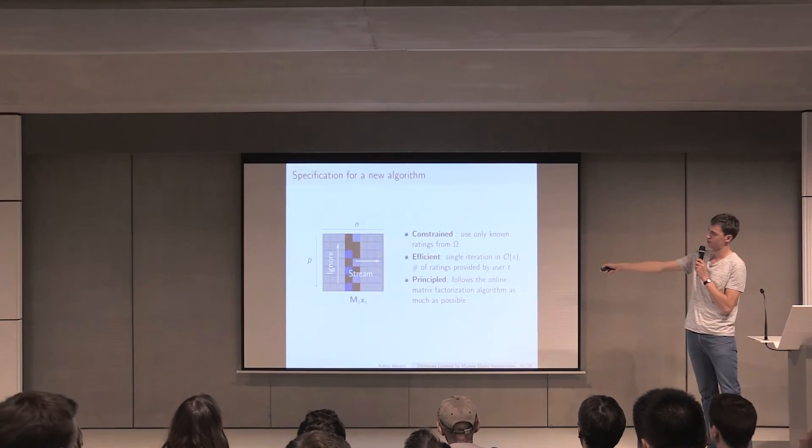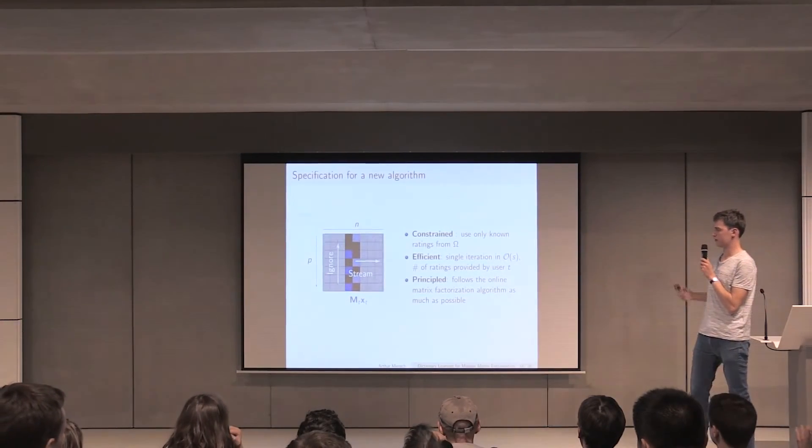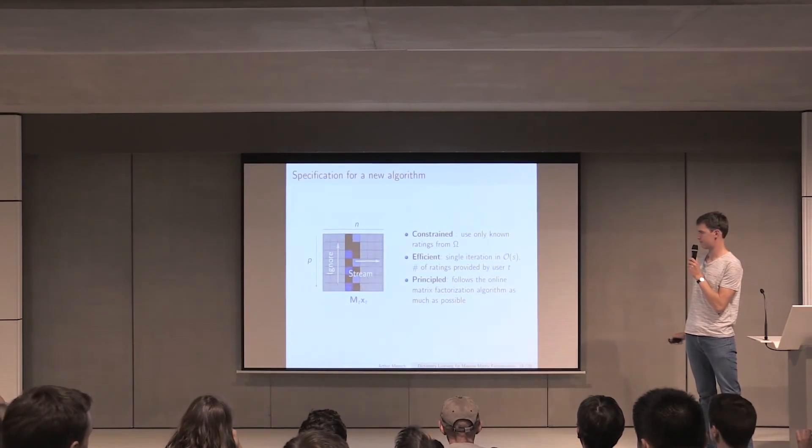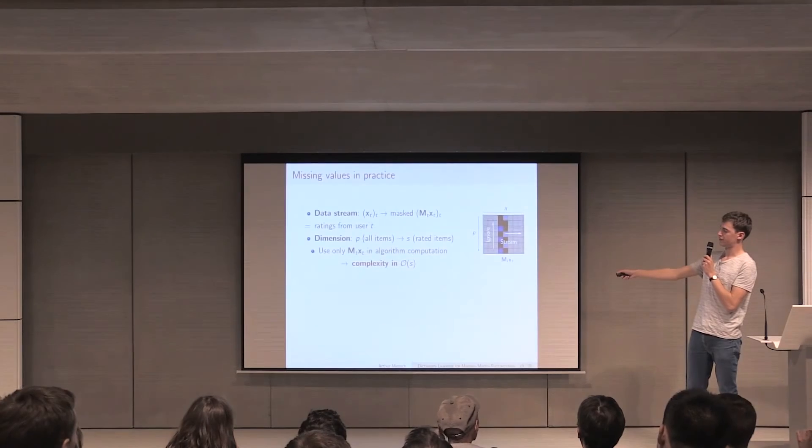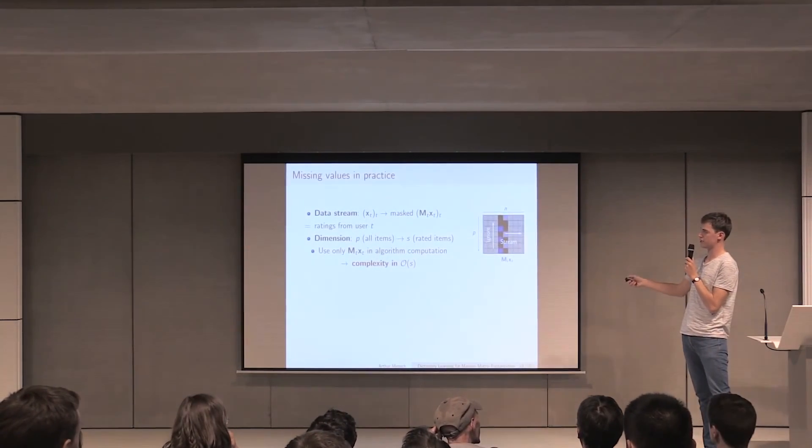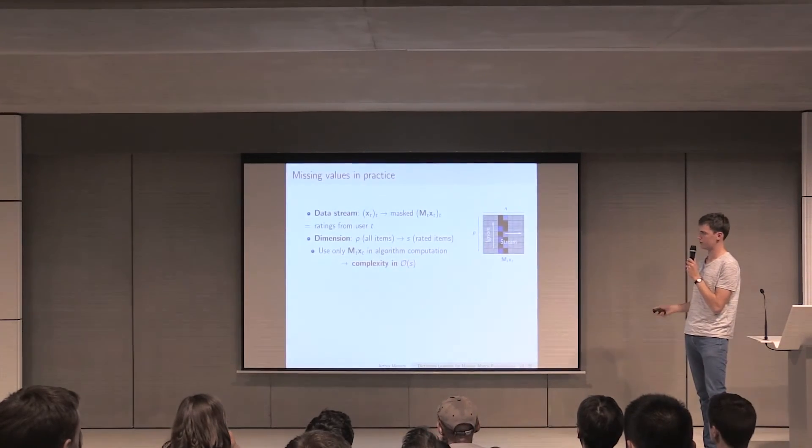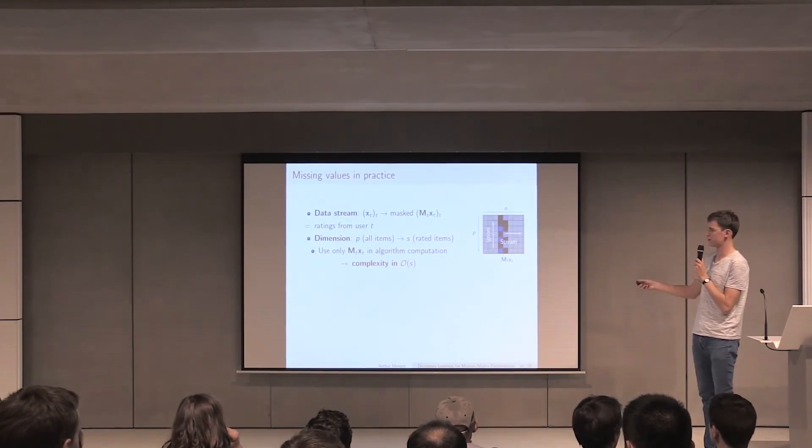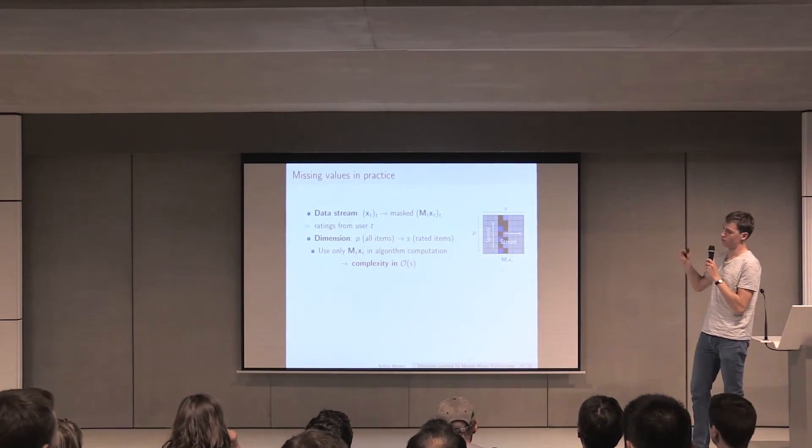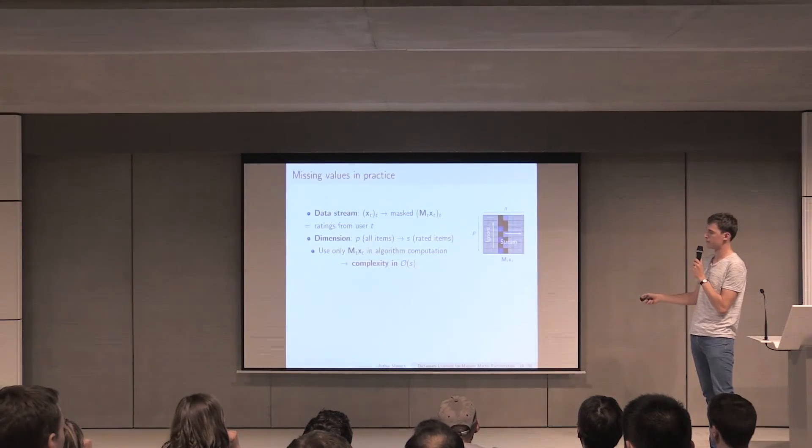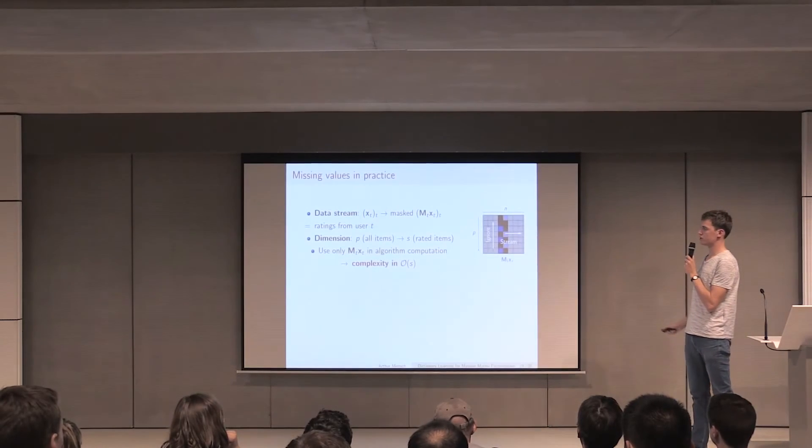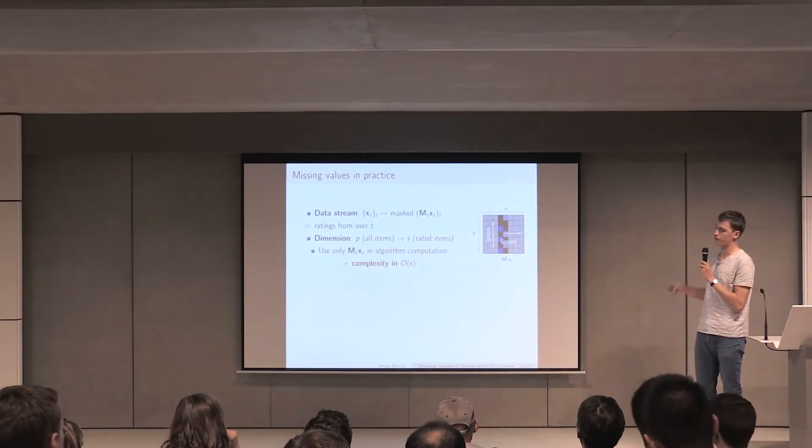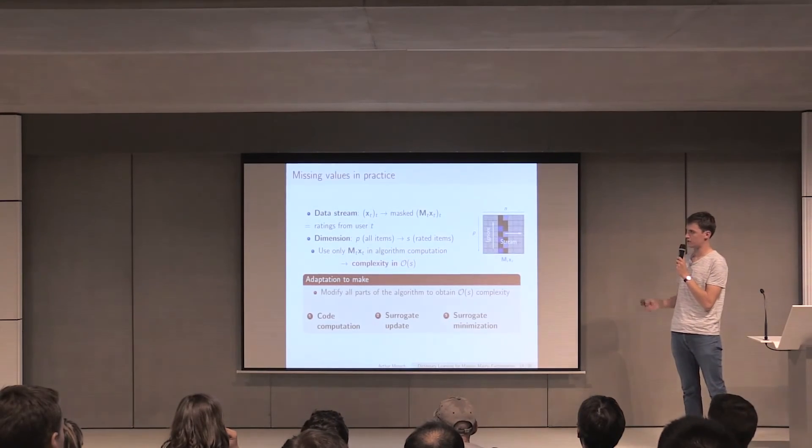The specification for our new algorithm is this: it should be constrained to only use known ratings. It should be efficient so that a single iteration should depend only on the number of ratings provided by user T. The user T has basically provided the columns there. And it should be principled, meaning that it should follow the online matrix factorization algorithm as much as possible, so as to show convergence. In practice, we go from a datastream X_t where we would have all the ratings to a masked datastream M_t X_t with the ratings that were provided by user T. The dimension of our problem has to be reduced, so that we are efficient. From P, the number of all items, to S, which is the number of rated items by the user T. To do that, we constrain ourselves to only use M_t X_t, the masked version of X_t, in the algorithm computation, and we ensure that every step of the algorithm presented above has a complexity in the number of ratings.